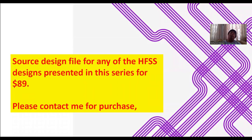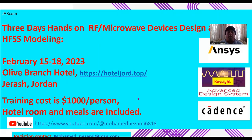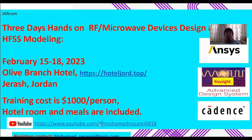If you want to reverse-engineer the design or just figure out how it's done — all of these videos are also covered in my training course, which I hold every other month. You can register for that course. The next session is February 15th to 18th, 2023. It will be held at the Olive Branch Hotel in Jarash, Jordan. The cost is $1,000 per person, which includes the hotel room, meals, and a few trips around the city.